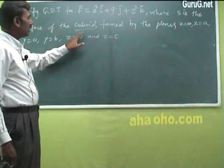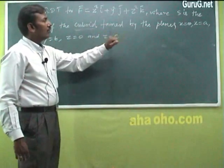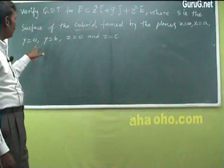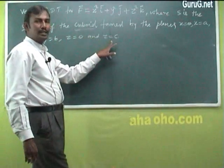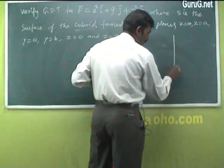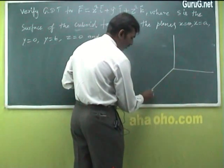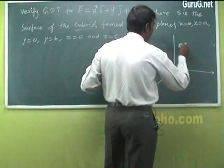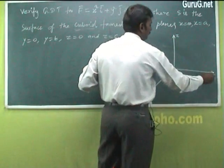The cuboid is formed by the planes x = 0, y = 0, y = b, x = a, z = 0, and z = c. Note that unlike Stokes' theorem which uses open surfaces, all six surfaces are closed in a cuboid.